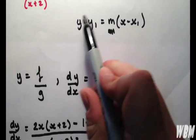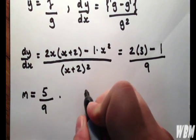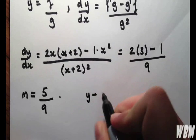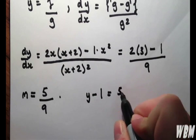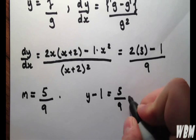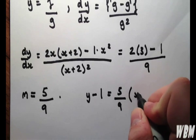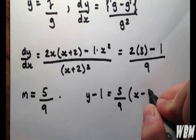Now we put this into the point-slope equation. We have y minus the y-coordinate given, which is 1, equal to m, which is 5 over 9, times by x, minus the x-coordinate given, which is also 1.